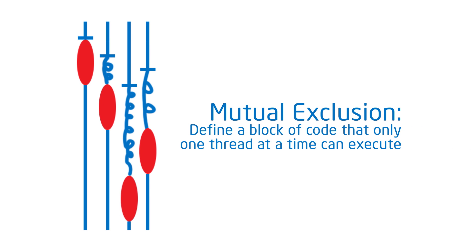The second family of synchronization constructs supports something called mutual exclusion. I define a set of code or updates of a variable that I want to happen one at a time. Only one thread at a time can do that block of code — it excludes everyone else. There's mutual exclusion. I'm going to show you how to do both of those in OpenMP.